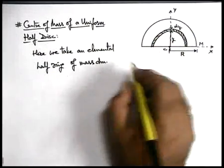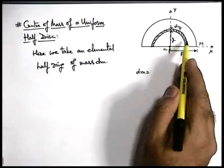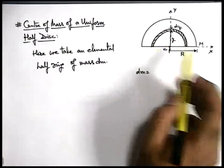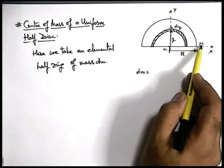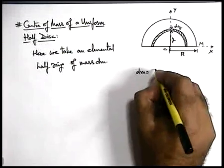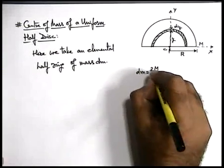If we wish to find out its mass dm, this can be given by multiplying mass per unit area occupied by the element. So here the half disc is of mass m and its area is πr²/2. So its mass per unit area is m/(πr²/2).